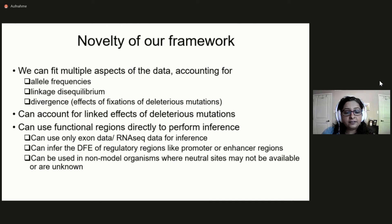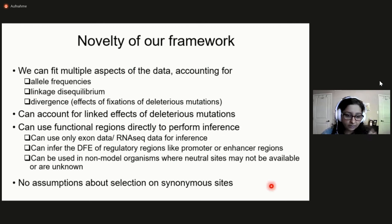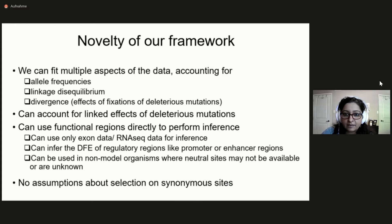Another advantage of this method is that we didn't make any assumptions about which sites in the coding region are neutral or not neutral. This means that if there was selection on synonymous sites, it would not affect our inference method. Currently, most DFE inference methods just assume that all synonymous sites are neutral, which works in many organisms. But the more compact the genome, the more likely it is that synonymous sites could be under selection.